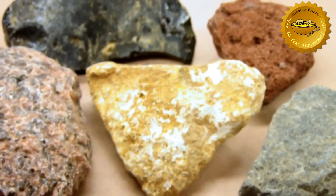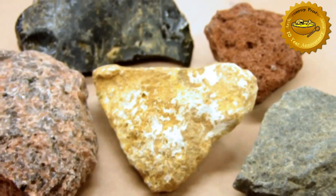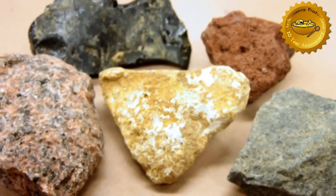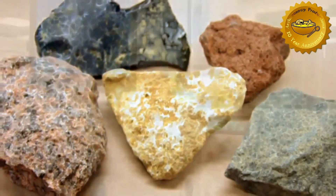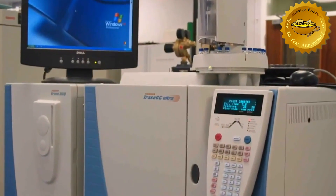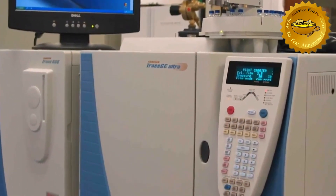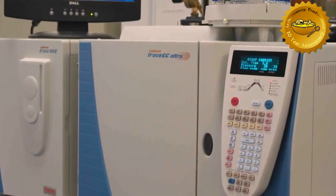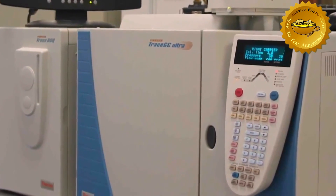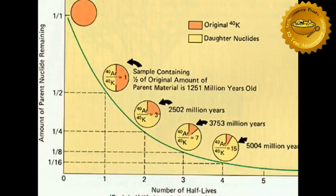Knowing the half-life of potassium-40, we can measure the argon gas in the rocks using a mass spectrometer and estimate the date when the rock was formed. The more argon gas present, the older the rock sample.